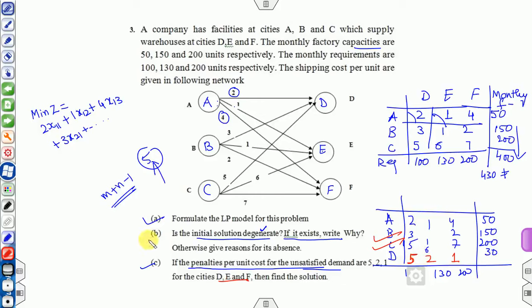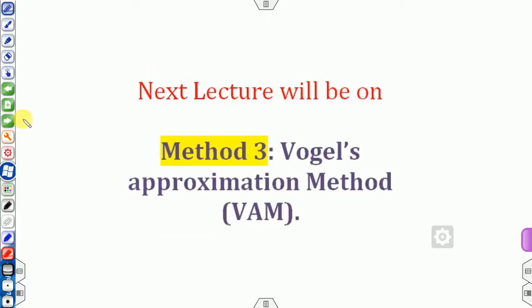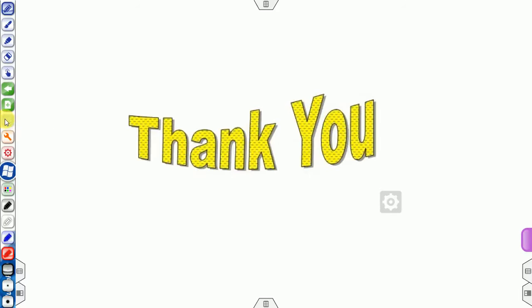With the penalty costs 5, 2, 1 assigned to the dummy row, solve the transportation problem accordingly. I hope you understand method one — the northwest corner method — and method two — the least cost method. Try implementing them on the various examples. The next lecture will cover method three: the Vogel approximation method, one of the most important methods in the transportation problem. Thank you very much and best of luck to the students.